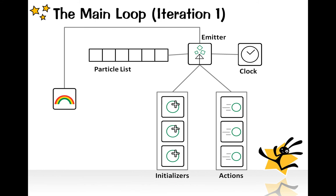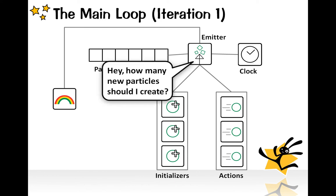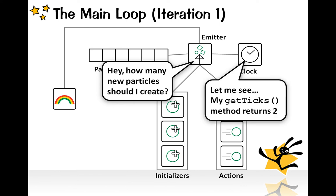OK, now let's take a deeper look into the main loop. Here's the first iteration. The emitter asks the clock object how many particles it should create. The clock object checks its getTicks method and returns two.